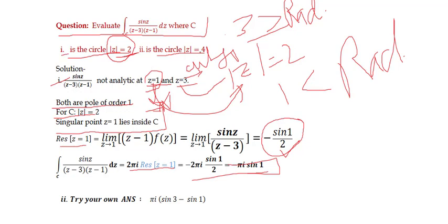For part (2), circle |z| = 4: both singular points z = 1 and z = 3 lie inside C. We need to calculate residues at both points. The residue at z = 1 is already found. Similarly calculate residue at z = 3, then apply the Cauchy Residue Theorem. I encourage you to try this yourself — the final answer should match the expected result. I hope you now understand how to use the Cauchy Residue Theorem. Thank you, keep practicing.